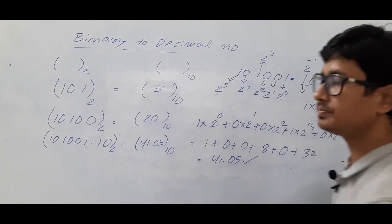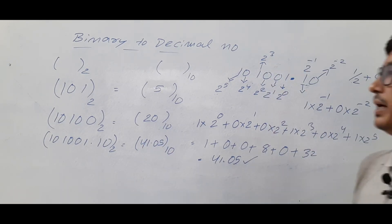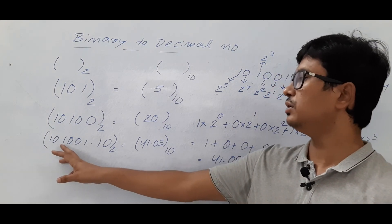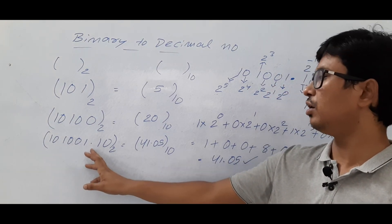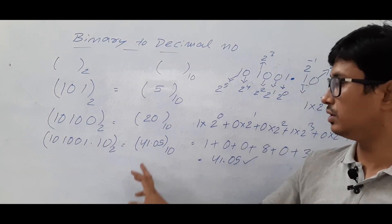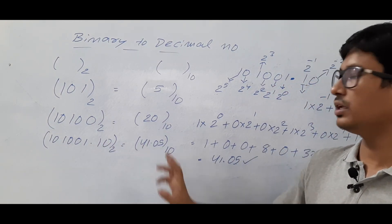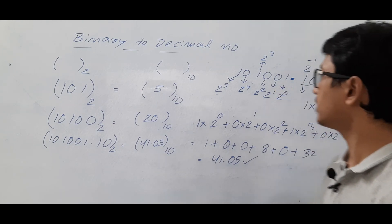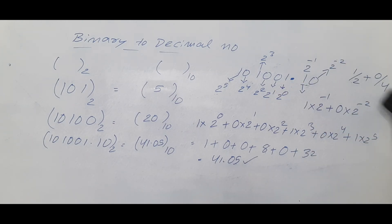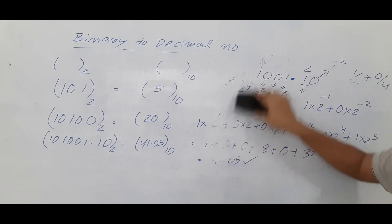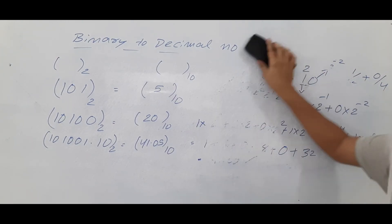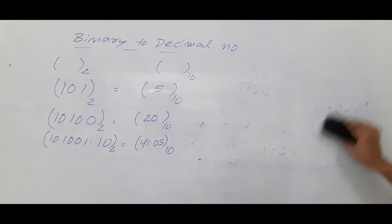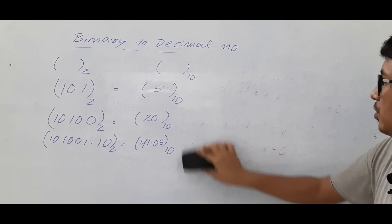So the equivalent decimal number for the binary number 101001.10 is 41.5. Now let's discuss one more example using the same process.